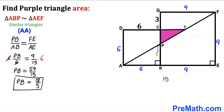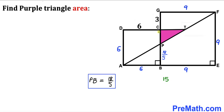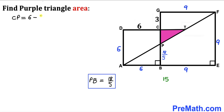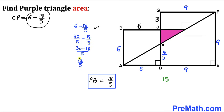Since we are interested in finding side length CP, we subtract 18/5 from 6. So CP equals 6 minus 18 divided by 5, which simplifies to 12 divided by 5 units.